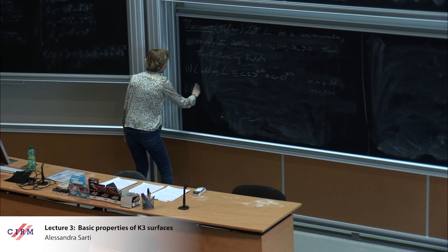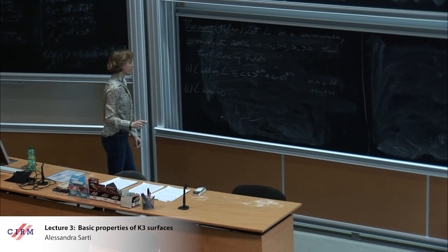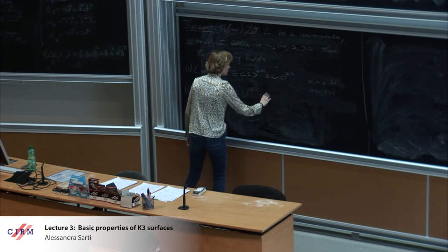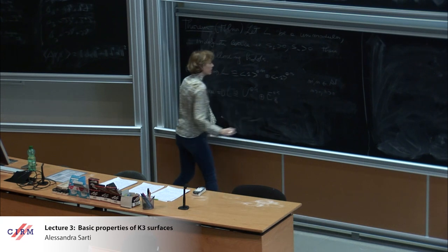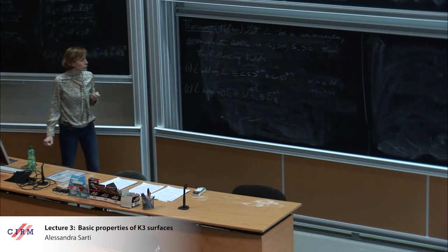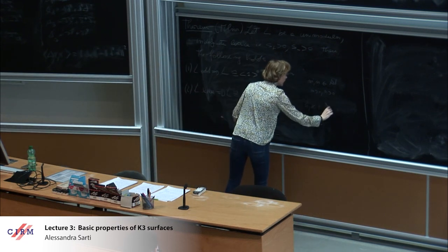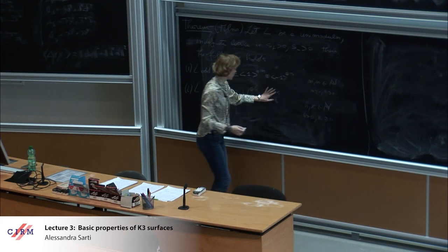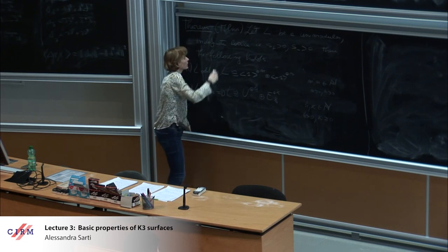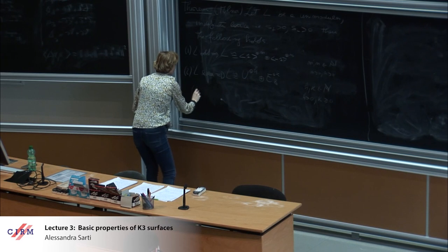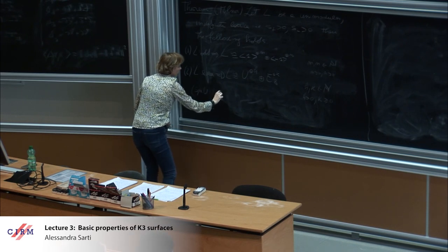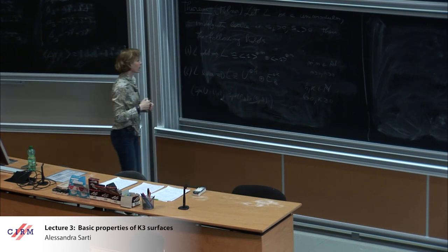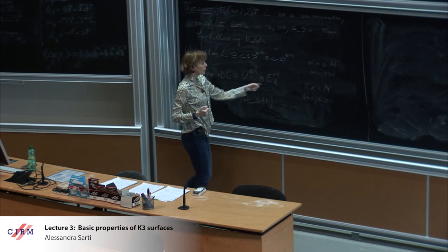If L is even, then L is isometric to H copies of U plus K copies of E8, where U and E8 are exactly the lattices introduced before. H is positive because it's indefinite, and K is bigger or equal to zero. The signature of U is (1,1), and the signature of E8 is (0,8) — it's negative definite — and both are even lattices.